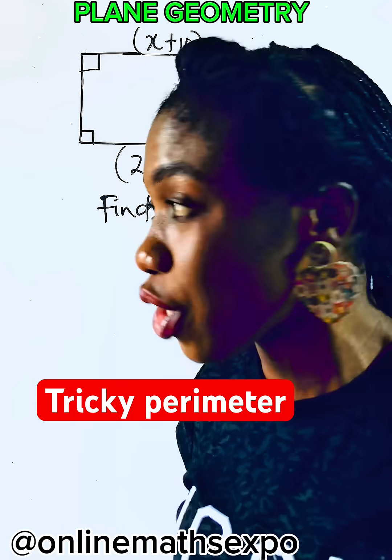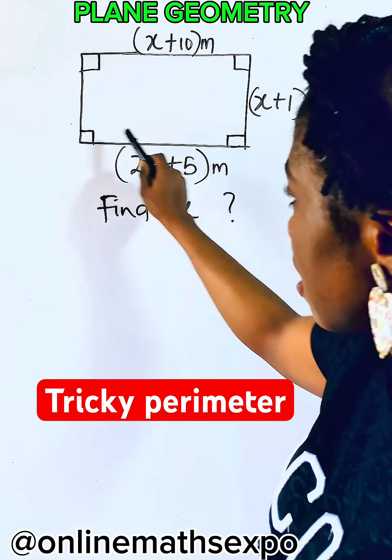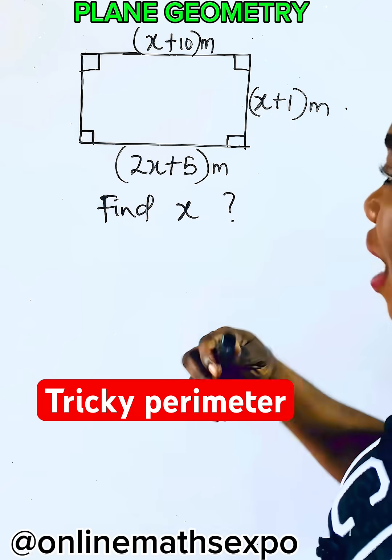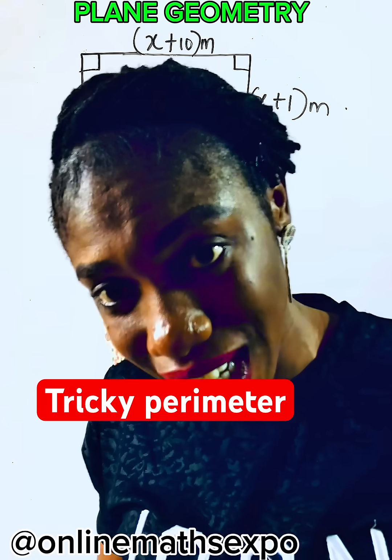To answer this question, carefully observe that this shape has these angles at 90 degrees. And what kind of shape has this kind of property? It is your rectangle.